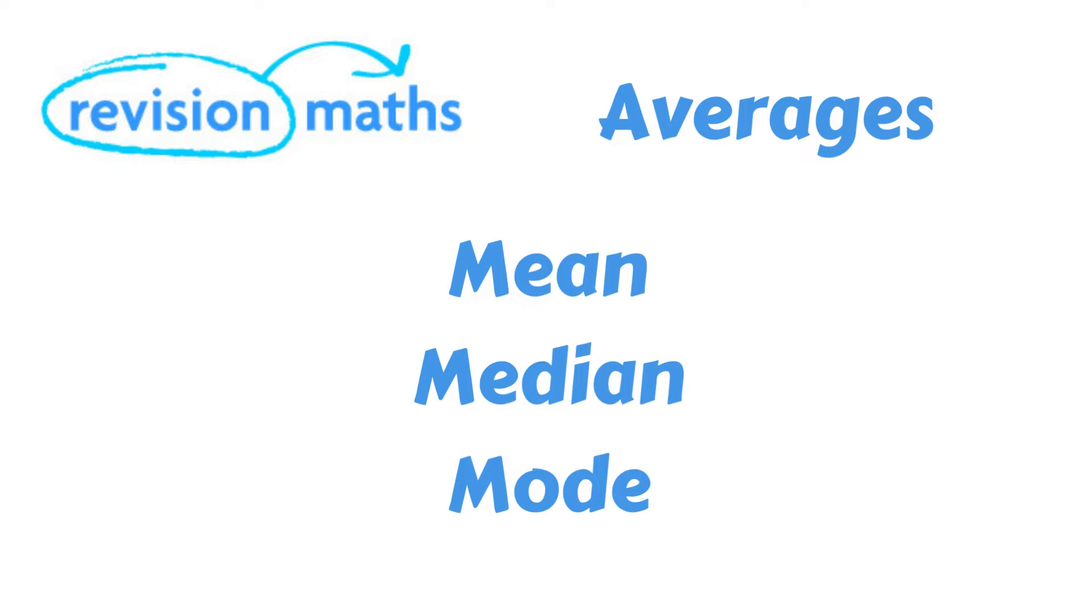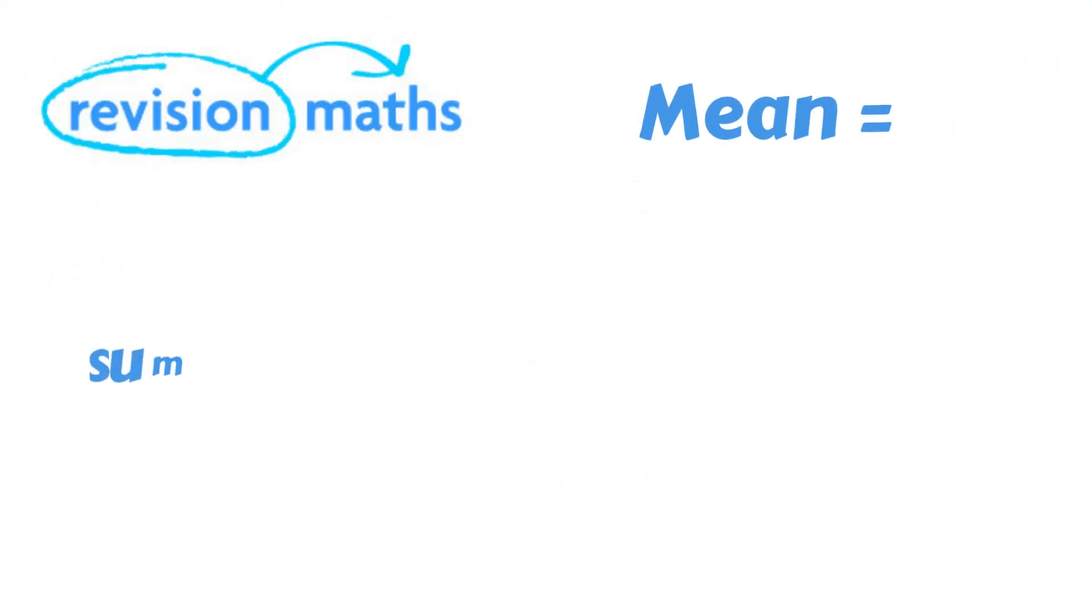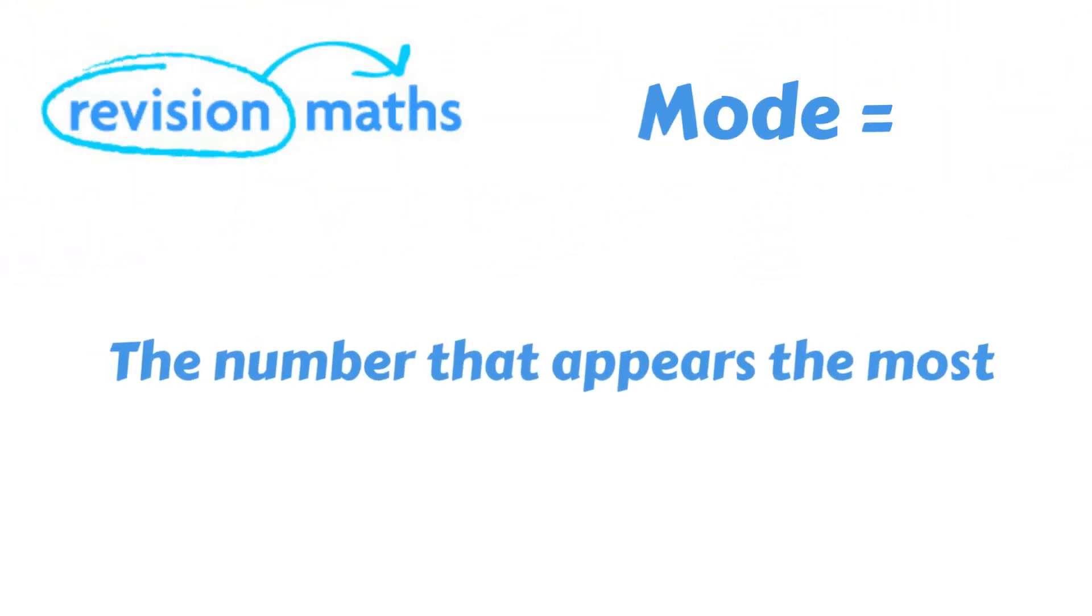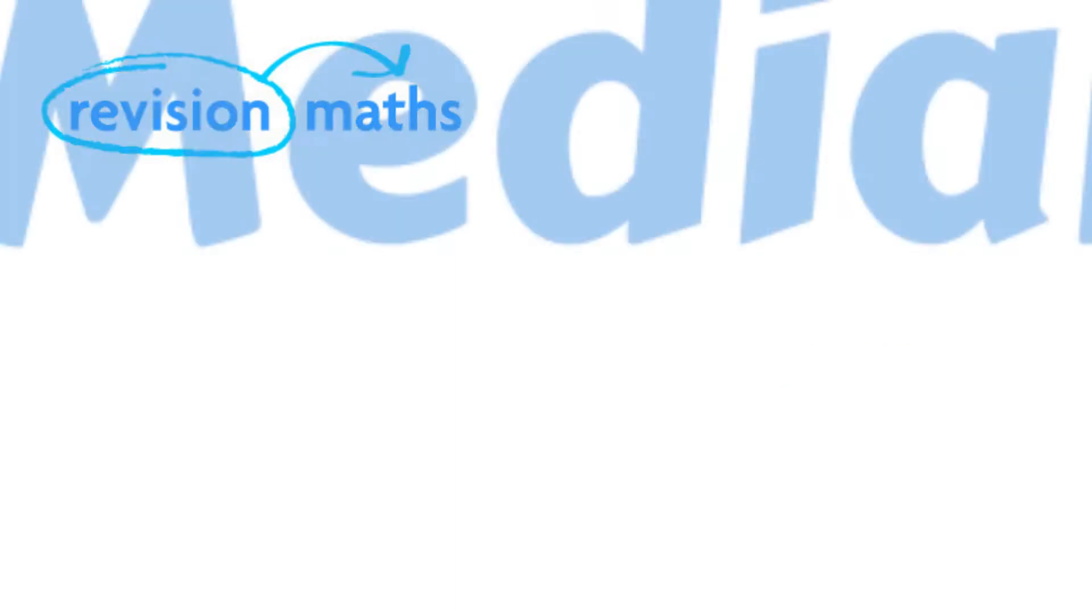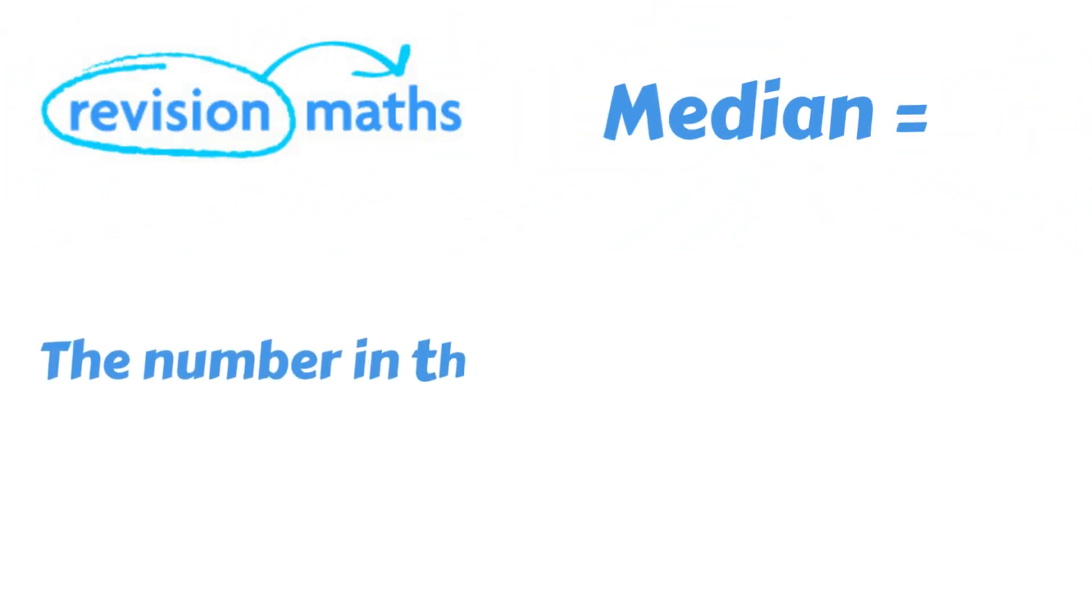There are three types of average: the mean, the median and the mode. The mean is what most people think of when they say average. The mean is calculated by adding up all the numbers you have and dividing them by the number of terms. The mode is the number in a data set which occurs the most frequently. The median of a group of numbers is the number in the middle of the data set when the numbers are placed in order of magnitude.